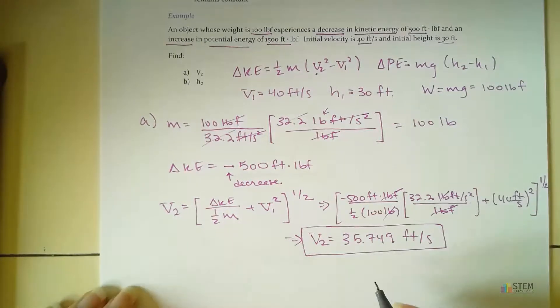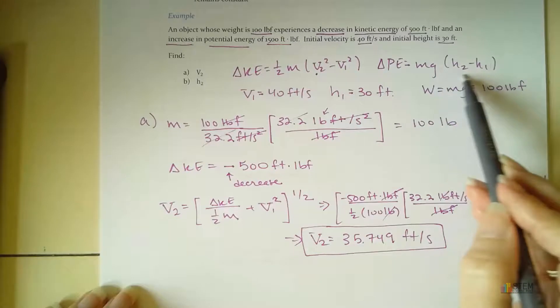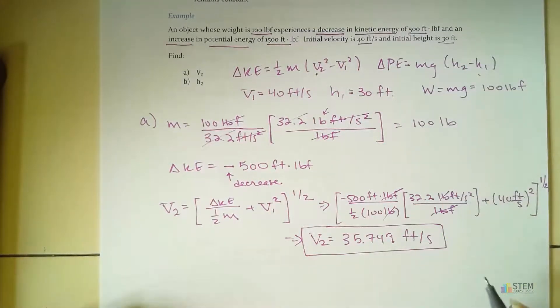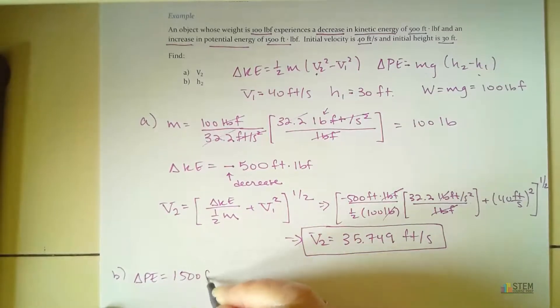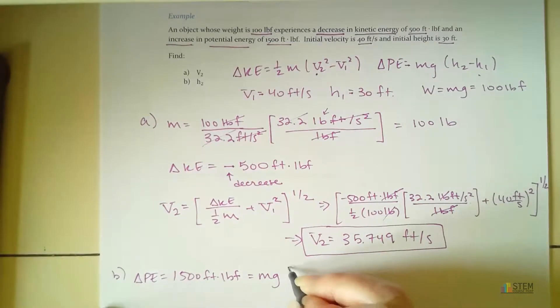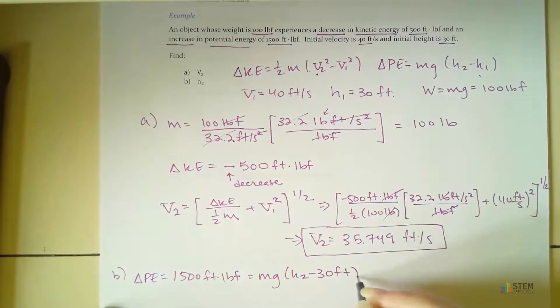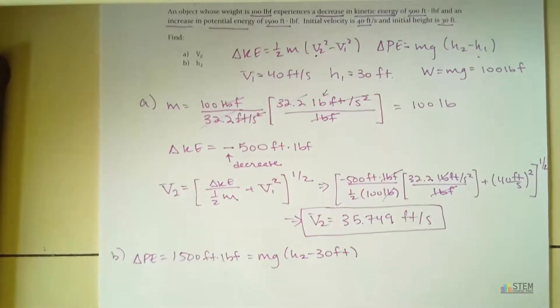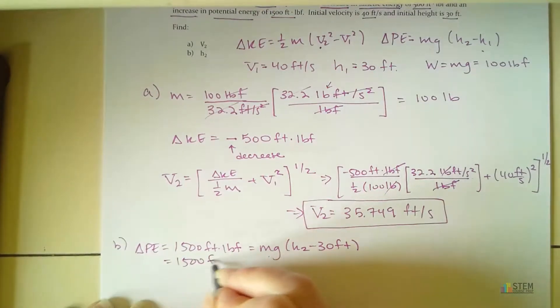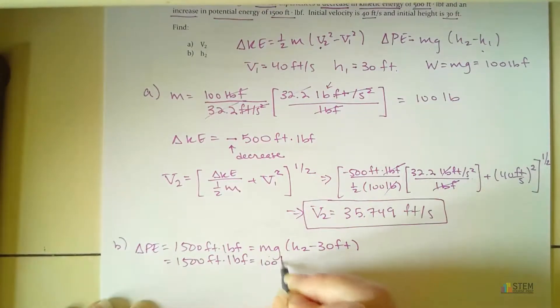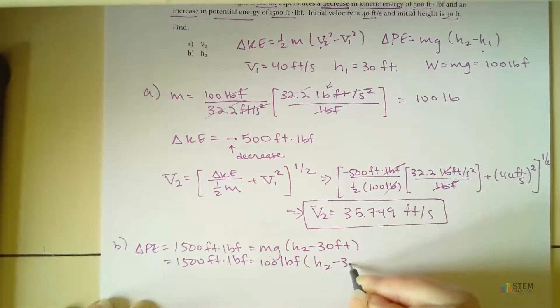Now for our second part, we're going to look at our potential energy equation. So it's essentially the weight times the change in height. And we were told we had an increase in potential energy. So here we're going to have a change of 1,500 foot pound force. That's going to equal mg times H2 minus the 30 feet, because this was the initial height that was given. Now we know what mg is that was given. That's weight. So that was 100 pound force. So let's go ahead and plug that in.